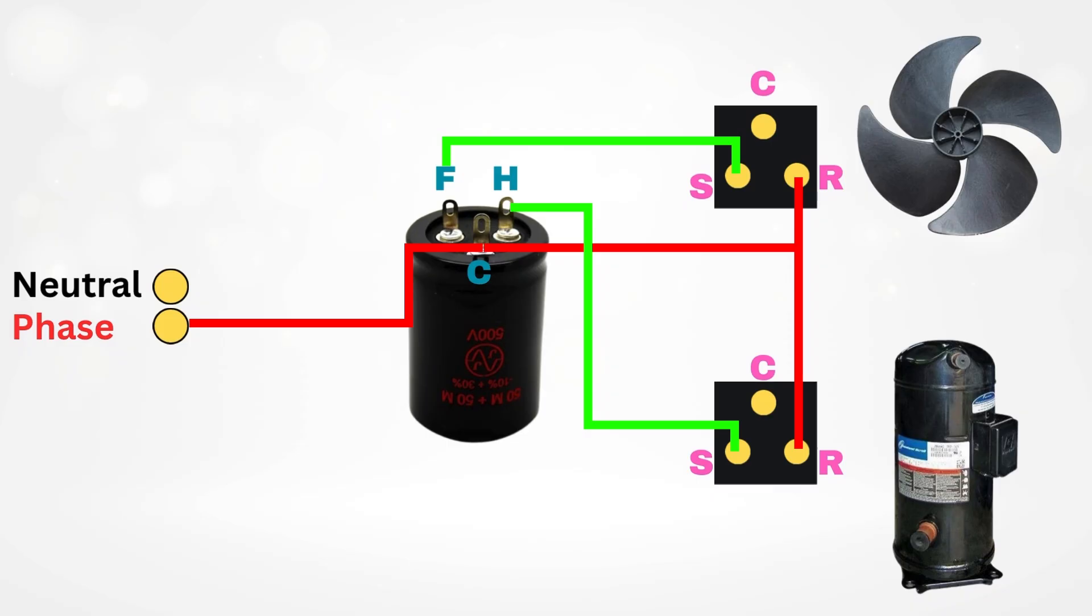Finally, the common wires of both the compressor and fan motor are connected to the neutral of the power supply. This completes the wiring setup. Once the indoor unit sends a signal to the outdoor unit to turn on, the capacitor instantly delivers stored energy to both the fan motor and the compressor through the fan and Herm terminals.